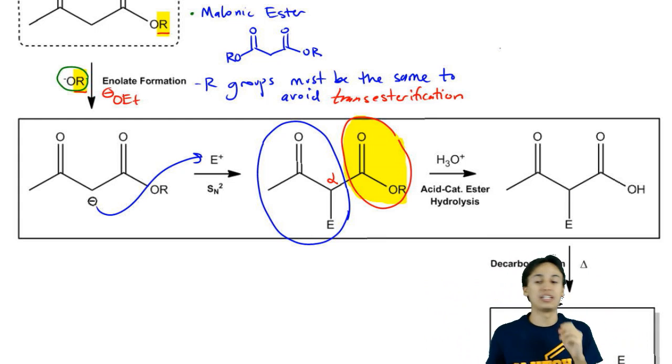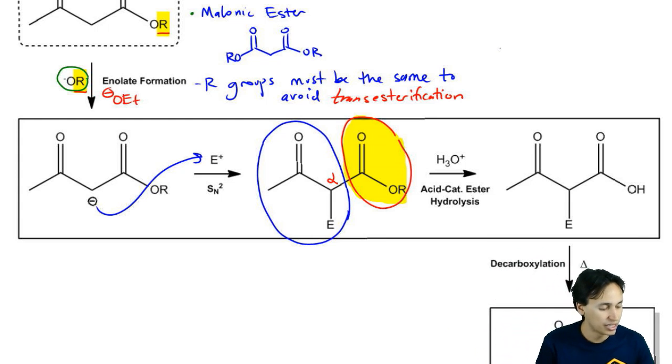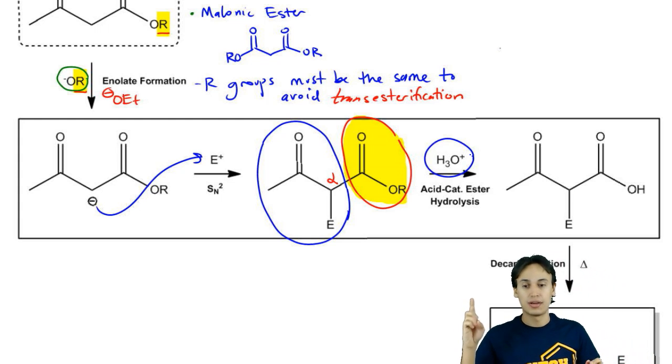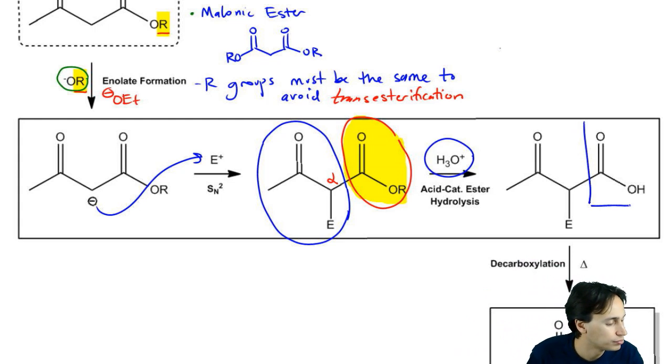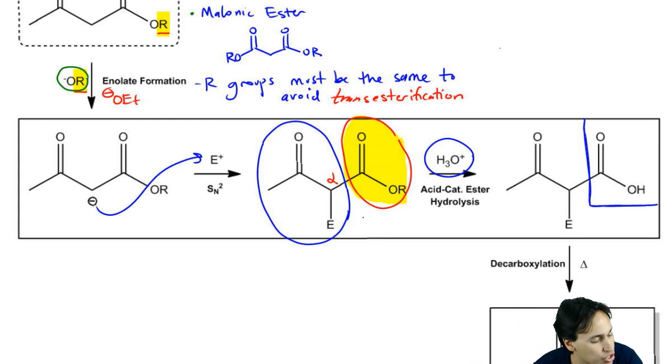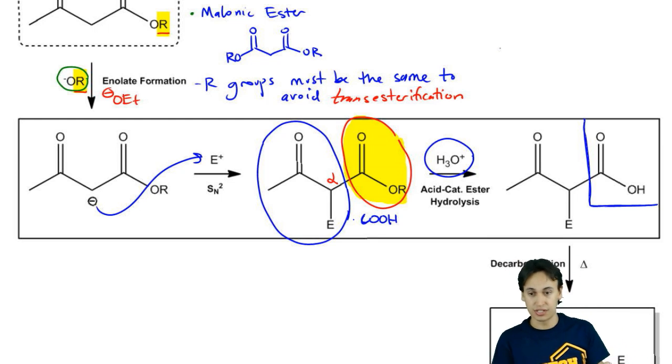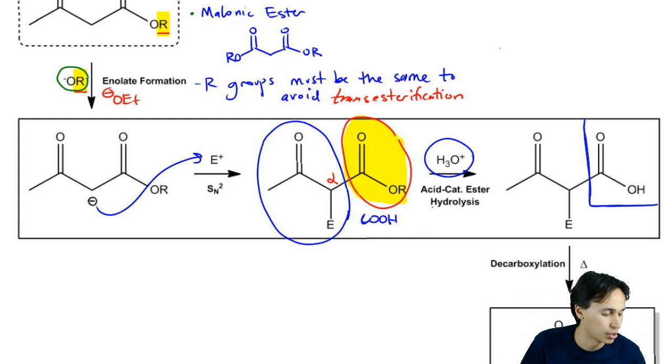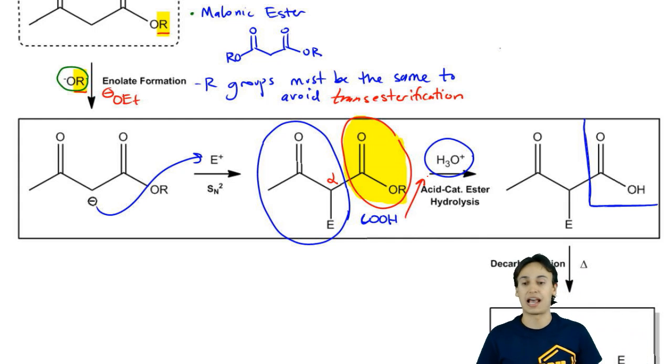The first thing we do is what's called an acid-catalyzed ester hydrolysis. In an acid-catalyzed ester hydrolysis, you're going to use acid and water to hydrolyze my ester to a carboxylic acid. The definition of a carboxylic acid derivative, which is what ester is, is that it can be hydrolyzed to a carboxylic acid using acid and water.